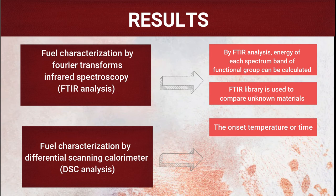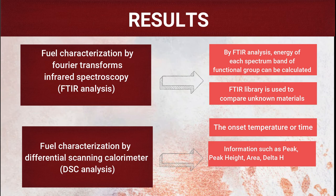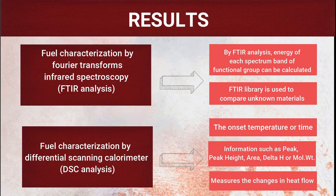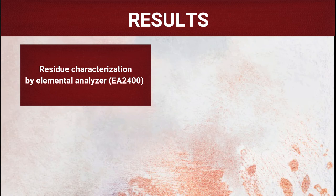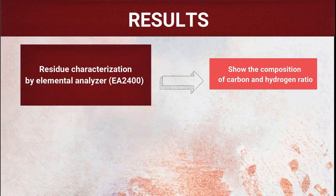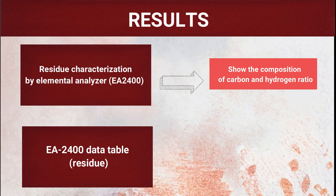The DSC graph shows information such as peak height, area, delta H, and molecular weight. It also measures the change in heat flow as a sample transforms from one state to another. For residue characterization by elemental analyzer, the results show the composition of carbon and hydrogen ratios.